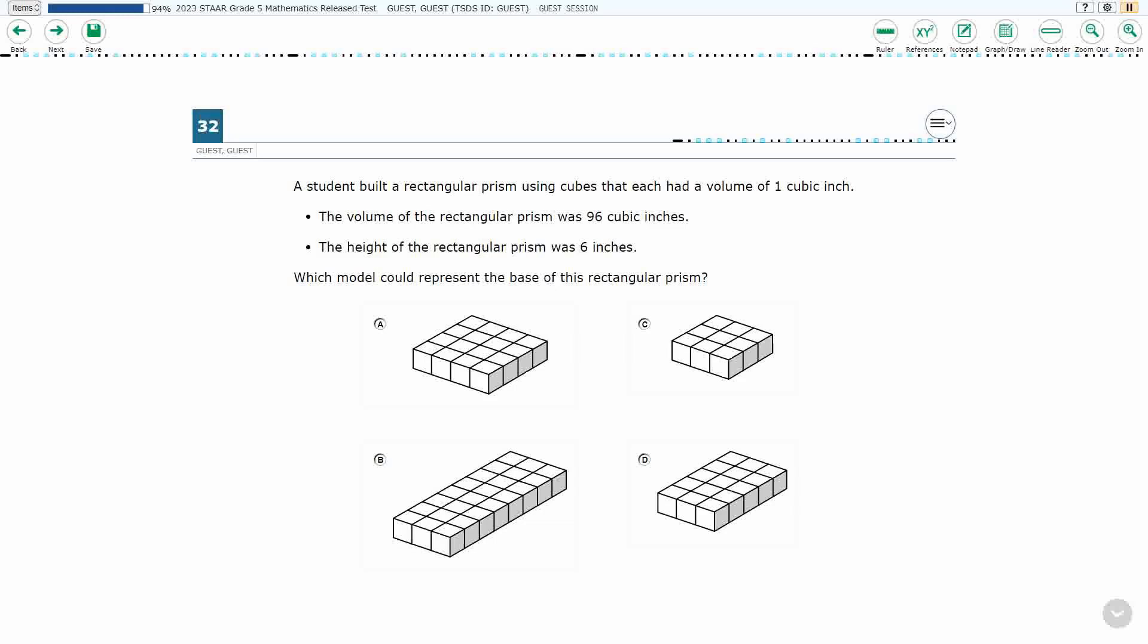All right, so we have a student building a rectangular prism with cubes. Each cube is a volume of 1 cubic inch. So we have a volume of 96, we have a height of 6, and we need to translate that into the base. Interesting problem here.